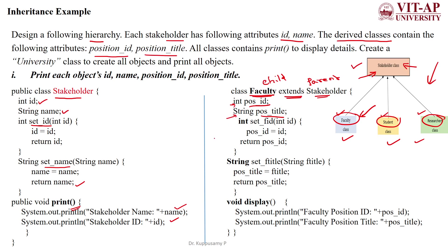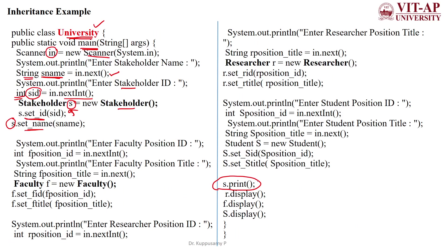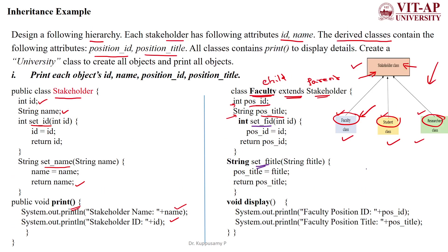We call the setter methods for both id and title. In the driver class, we create an object named f for Faculty, call the set methods to assign the values, and then call the display method to print the faculty details.